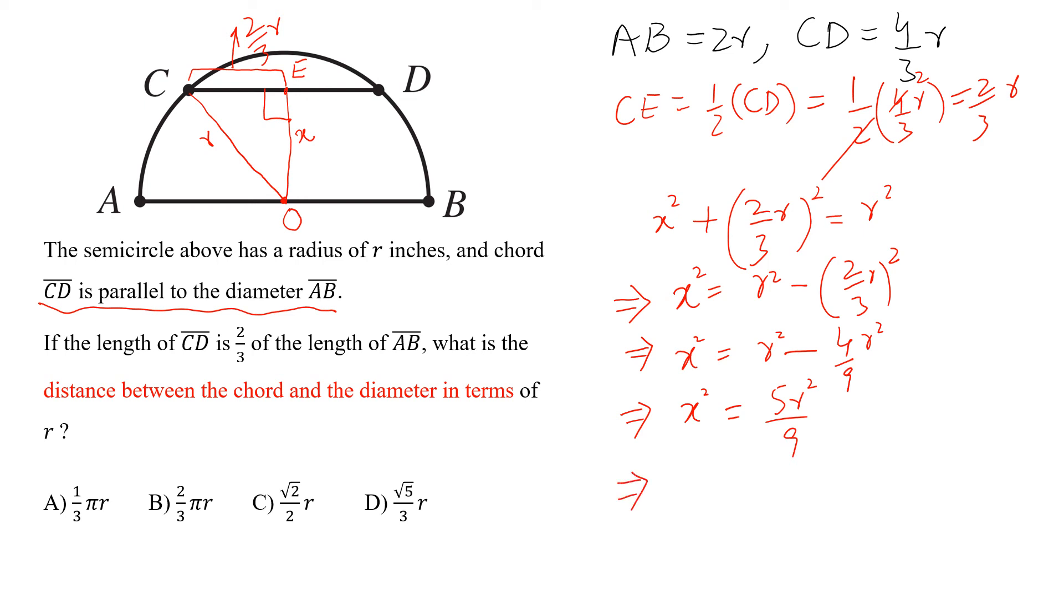By taking the square root, we get x = ±√(5r)/3. But this is the distance, so x = √5r/3.